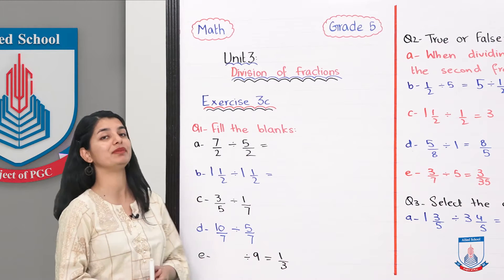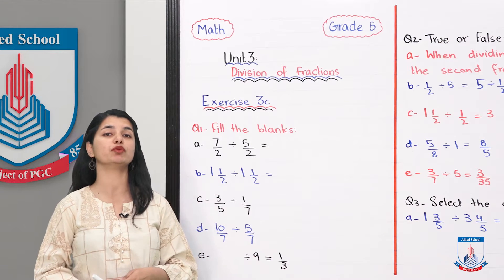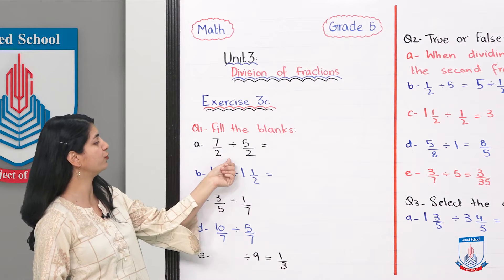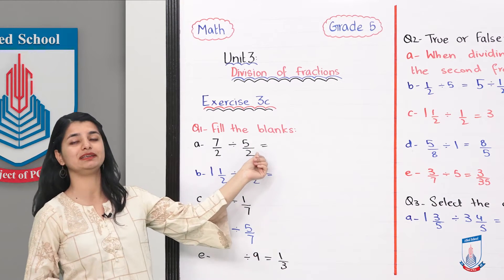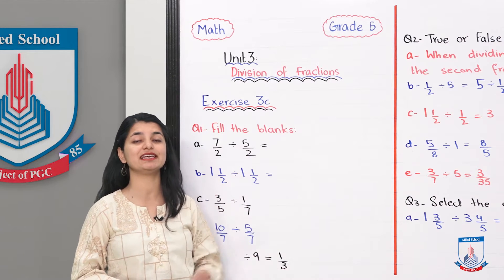First question is fill in the blanks. You have to fill the blanks using the right answers. This part is 7 over 2 divided by 5 over 2. When you have two fractions, what do we do?